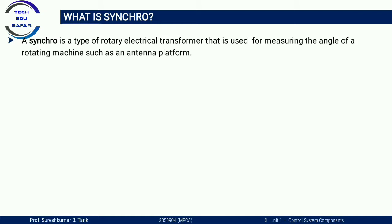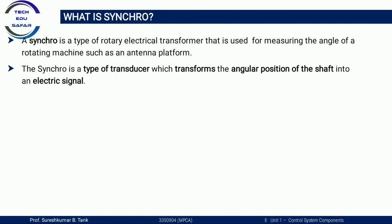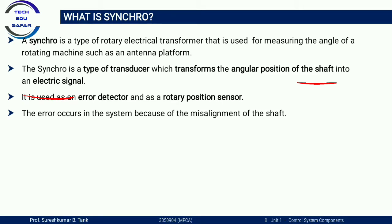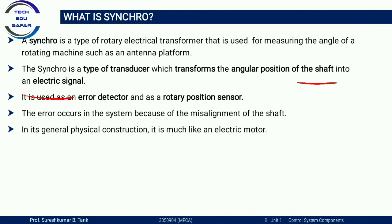What is a synchro? Synchros are electromechanical devices used in servomechanisms to convert mechanical angular displacement to an electrical signal and vice versa. Here, angular position means shaft position. Synchro also provides electrical signals. A synchro is also an error detector and a rotary position sensor. Errors occur in the system because of misalignment of the shaft.